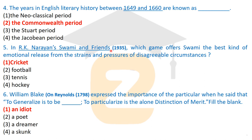Question five: R.K. Narayan's 'Swami and Friends,' published in 1935, which offers Swami the best kind of emotional release from the strains and pressures of his disagreeable circumstances. This novel by the Indian English literature novelist was published in 1935.